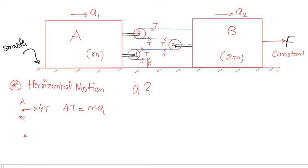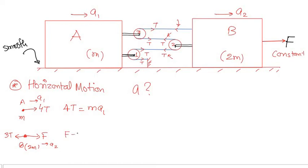For block A: it experiences tension from pulley 1 (2T) and pulley 2 (2T), giving a net upward force of 4T. Newton's law: 4T = m·a1. For block B on the horizontal surface: the applied force F acts forward and 3T acts backward, so: F − 3T = 2m·a2.